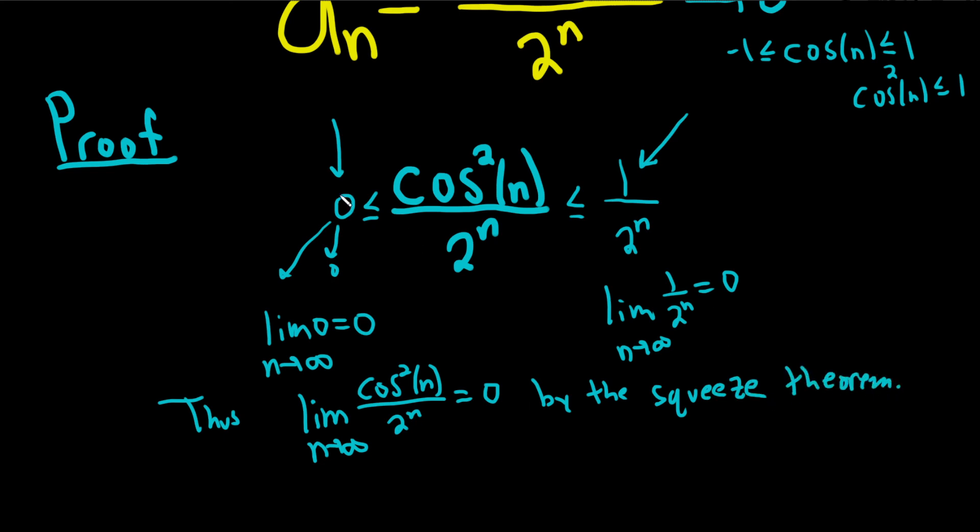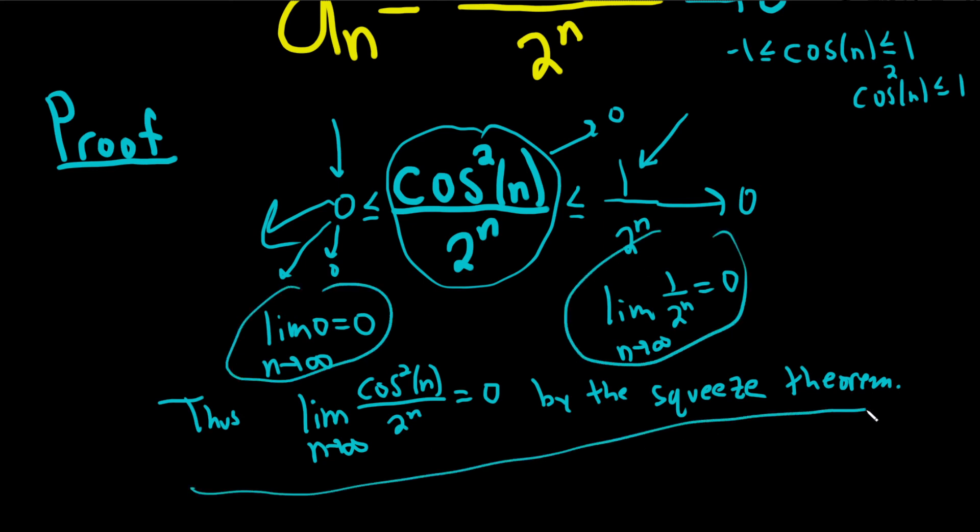Even if you didn't know the squeeze theorem, this kind of argument might make sense because this is trapped in the middle, this approaches 0, this approaches 0, therefore whatever is trapped in the middle must also approach 0. So just writing it down like this and then saying this is a formality and it creates what's called a mathematical proof. I hope this video has been helpful.